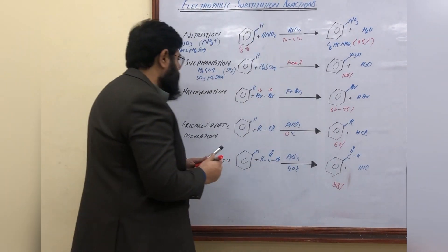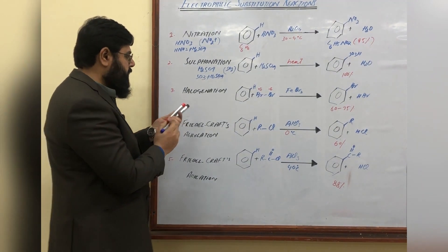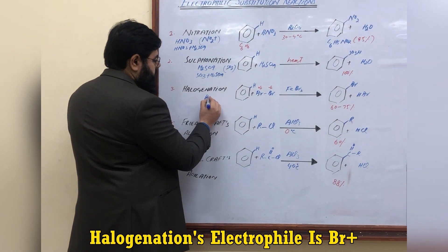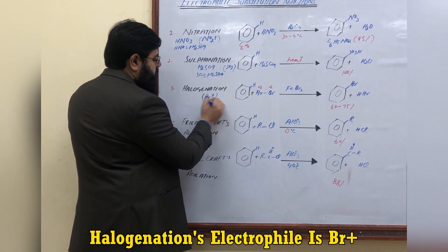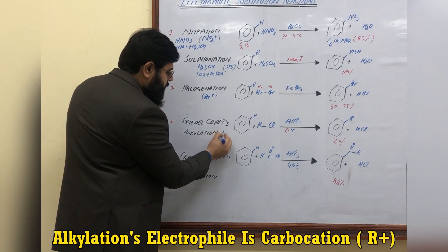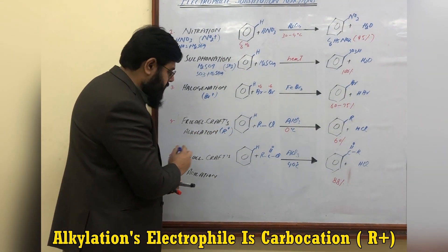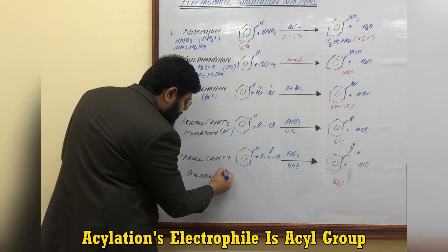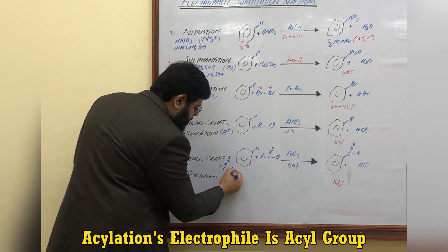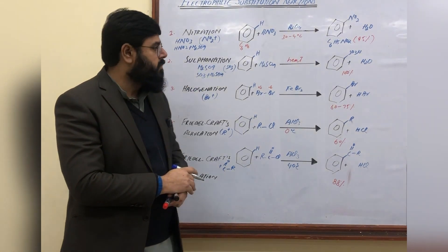To summarize the working electrophiles: in bromination the working electrophile is Br⁺ (bromine positive); in Friedel-Crafts alkylation the working electrophile is a carbocation; and in Friedel-Crafts acylation the working electrophile is the acyl group.